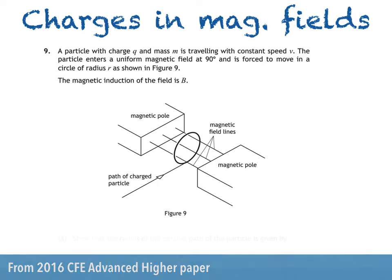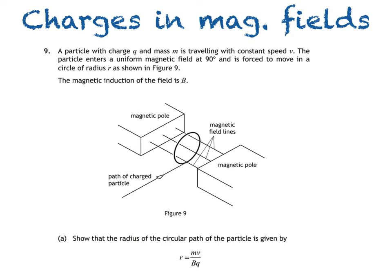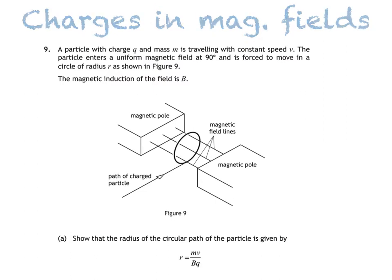We're then asked to show that the radius of the circular path of the particle is given by r equals mv divided by bq. Let's make some space for the answer.